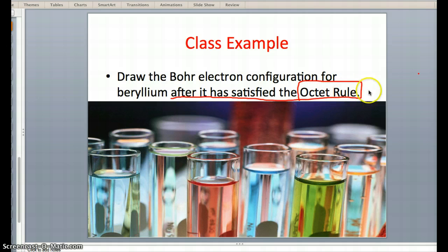Remember that the octet rule states that any atom will attempt to fill its outer valence shell to satisfy the octet rule. Knowing that, let's take a look at the periodic table and find beryllium.